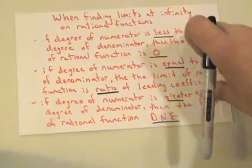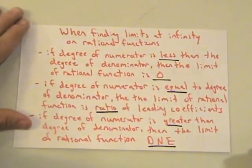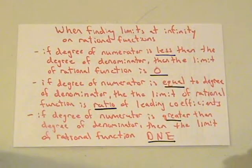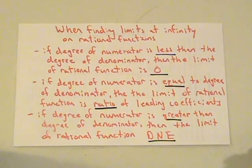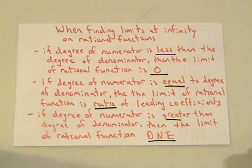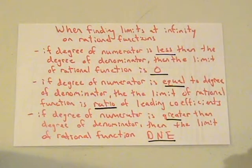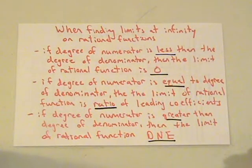When finding limits at infinity we have three simple rules. If the degree of the numerator is less than the degree of the denominator — for example x over x squared — then the rational function will equal 0. If the degree of the numerator is equal to the degree of the denominator — like x squared over x squared — then the limit is the ratio of the leading coefficients. And if the degree of the numerator is greater than the degree of the denominator — like x cubed over x squared — then the limit does not exist.